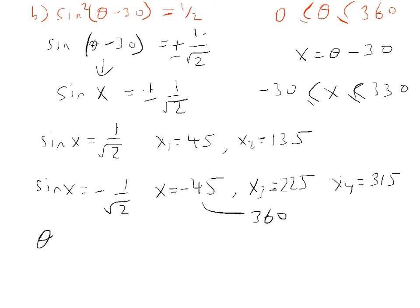What we now need to do is just convert back to theta. And we know x equals theta minus 30. So we know what our x's are. We just need to add 30 to all our x's. So we should have 45 plus 30, 75. 135 plus 30, 165. And then 255. And 345. So those are our four values. Thank you.